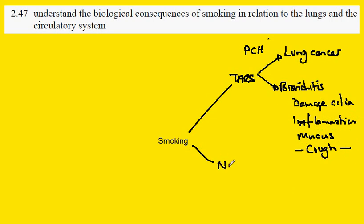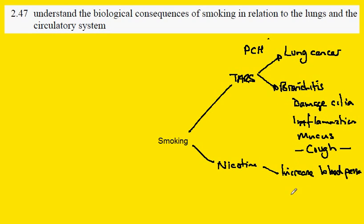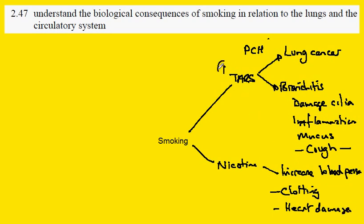In cigarette smoke there is the drug nicotine, which is addictive. One of the things that nicotine does is increase blood pressure. We also need to be aware that the effects can include causing clotting in the bloodstream and heart damage. So that is the nicotine effect.